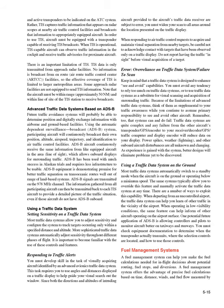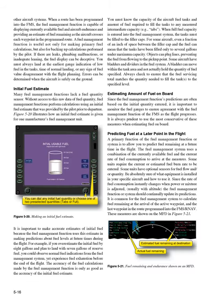Fuel management systems: a fuel management system can help you make the fuel calculations needed for in-flight decisions about potential routing, fuel stops, and diversions. A fuel management system offers the advantage of precise fuel calculations based on time, distance, winds, and fuel flow measured by other aircraft systems. When a route has been programmed into the FMS, the fuel management function is capable of displaying currently available fuel and aircraft endurance, and providing an estimate of fuel remaining as the aircraft crosses each waypoint in the programmed route. A fuel management function is useful not only for making primary fuel calculations, but also for backing up calculations performed by the pilot. If there are leaks, plumbing malfunctions, or inadequate leaning, the fuel display can be deceptive. You must always land at the earliest gauge indication of low fuel in the tanks, time of normal landing, or any sign of fuel value disagreement with the flight planning.